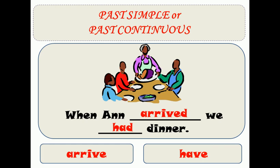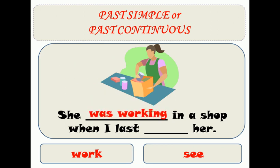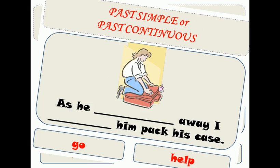This one is an action followed by another simple action at the same time, but it didn't take a long time. She was working in a shop when I last saw her — so the last time I saw her, she was working in a shop.